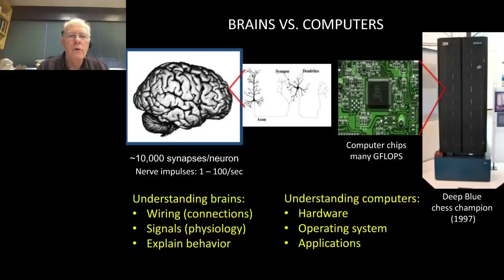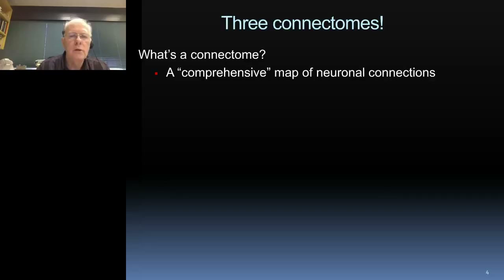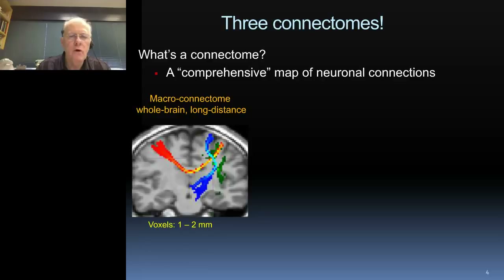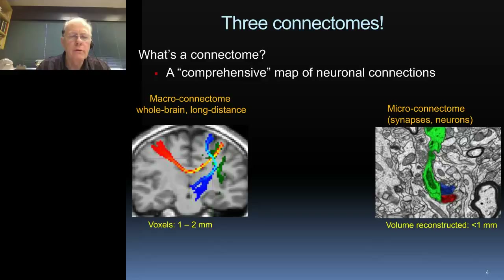That brings us to a world of connectomics, analogous to the genomics used to study the sequence of the genetic code. For connectomics, the aspiration is to obtain comprehensive maps of neuronal connections. Our aspiration is to study long-distance connections from one patch of gray matter to another through the underlying white matter, down to the resolution of the underlying volume elements, or so-called voxels — that's the macro connectome.